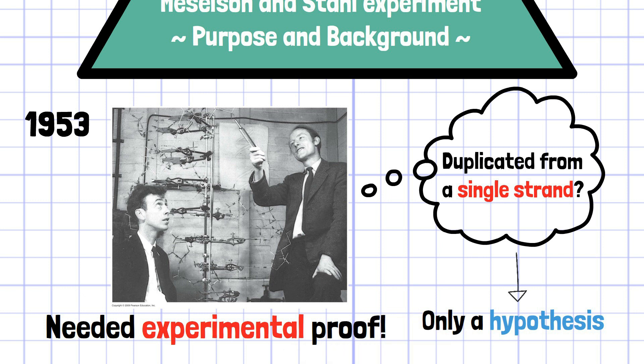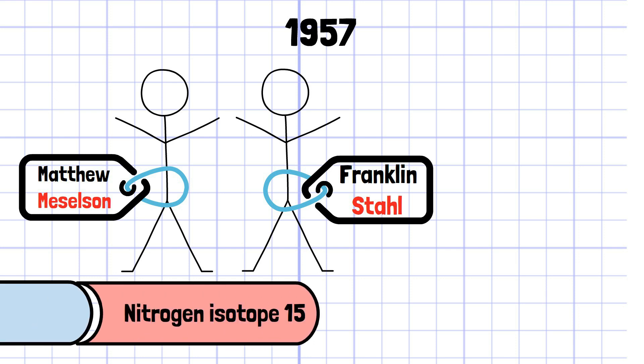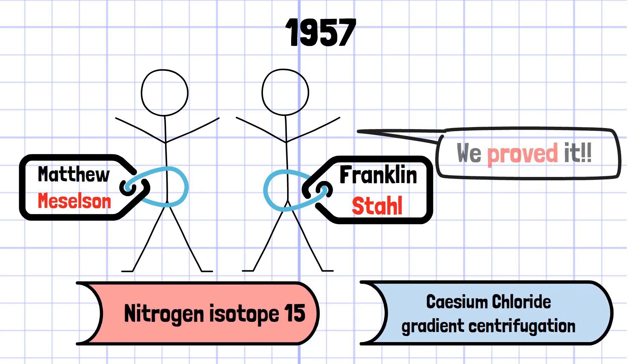So it was strongly required to prove the replication mechanism experimentally. In 1957, the U.S. biologists Matthew Messelson and Franklin Stahl utilized nitrogen isotope 15 and cesium chloride centrifugation method to unravel this mystery.